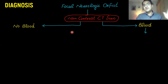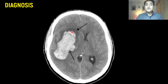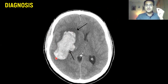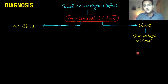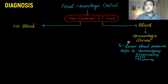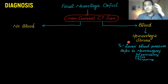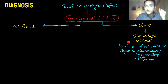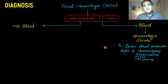Blood is white on CT scan. If you see blood on CT scan, it is a hemorrhagic stroke and you initiate hemorrhagic stroke protocols. The clinician can lower blood pressure to decrease bleeding, then refer the patient to neurosurgery. Neurosurgeons will either perform craniotomy to relieve pressure, coiling to stop the bleed, or clip the vessel by opening the brain.